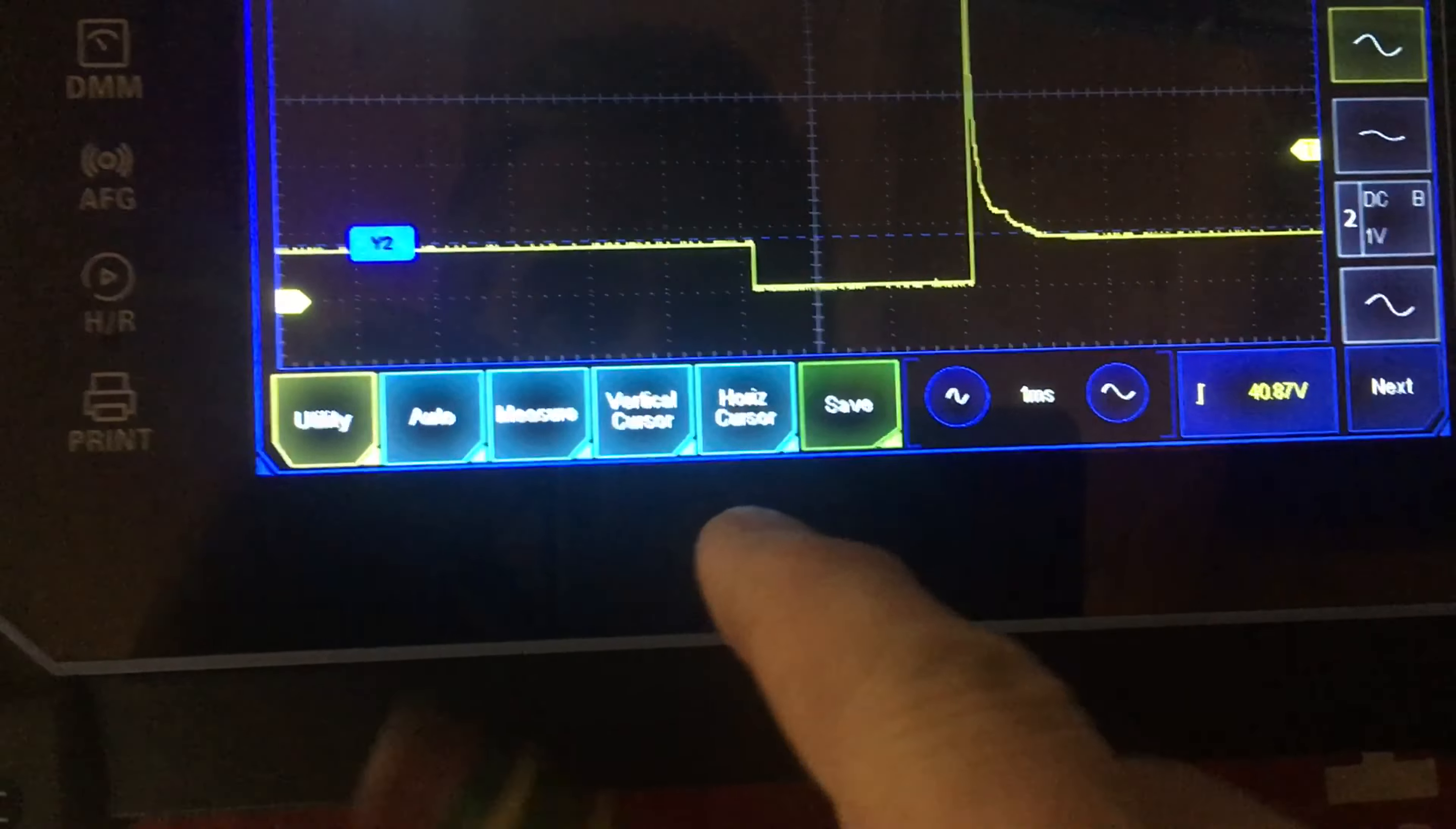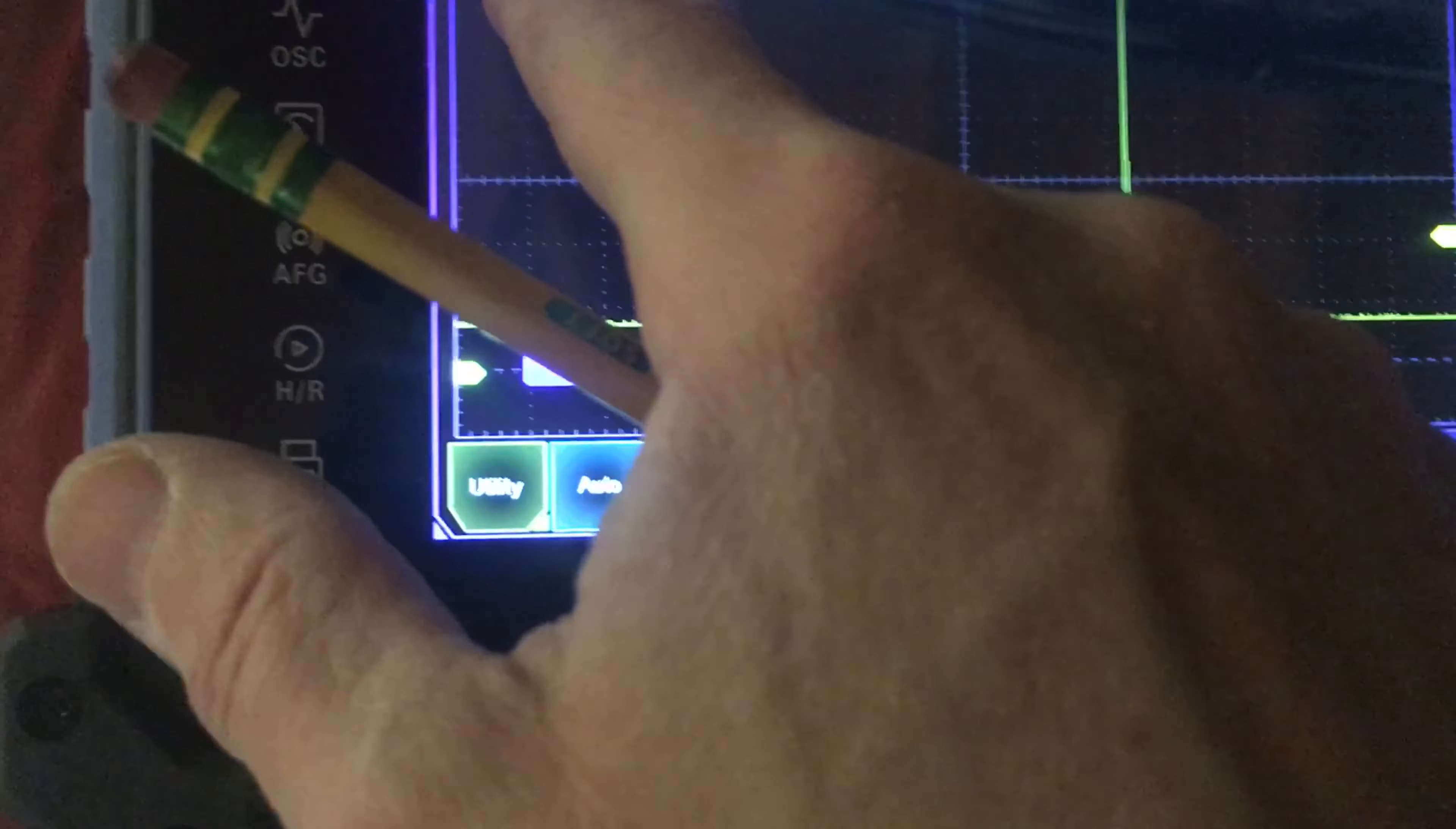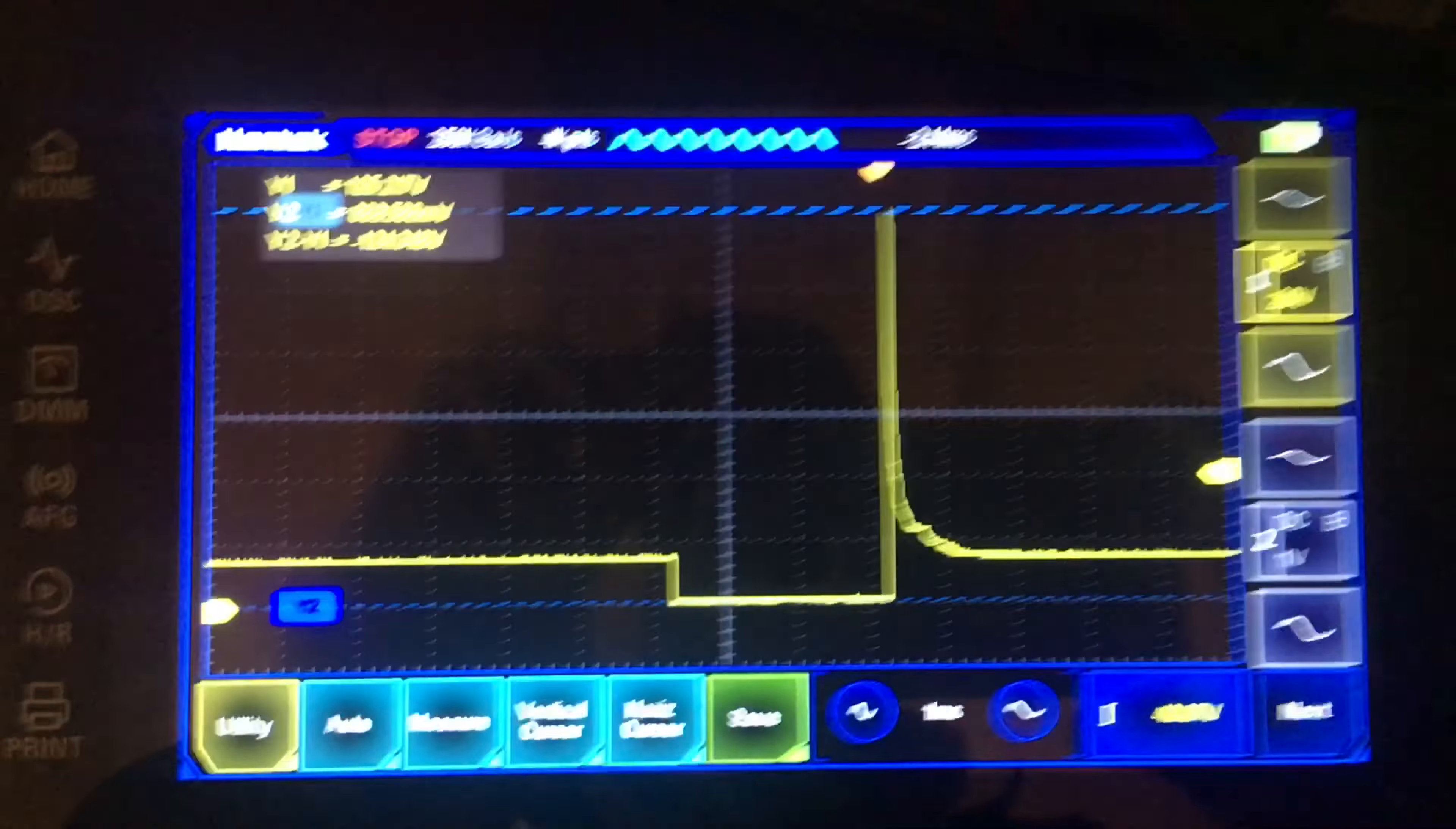In fact, let's measure it. Let's go to the horizontal cursor here. Let's bring the cursor down to zero basically, and we'll bring the one up to the peak. So that's 125 volts. I hope you can see the details there. I'm not being dead accurate, there's no need to be, but I think you get the point about the attenuator.